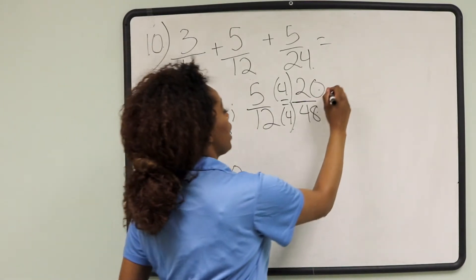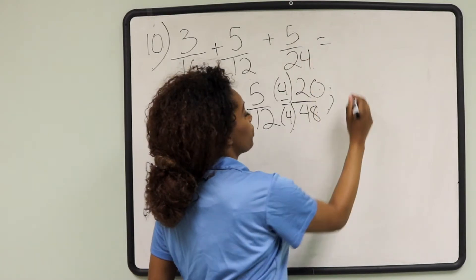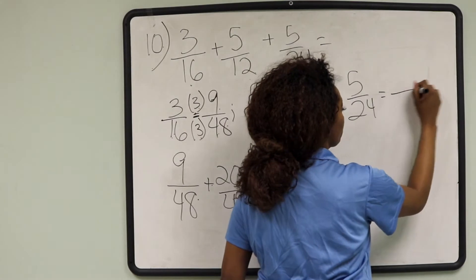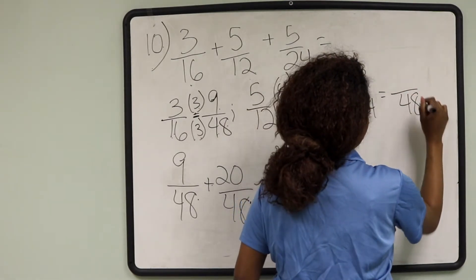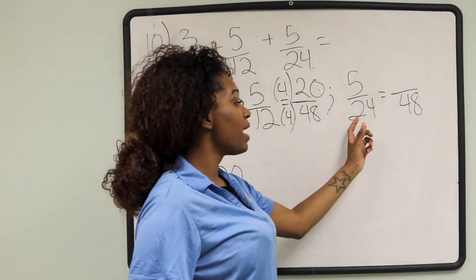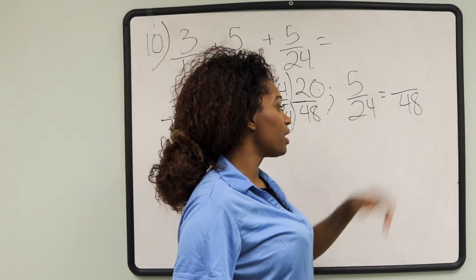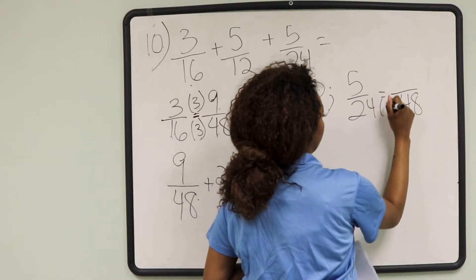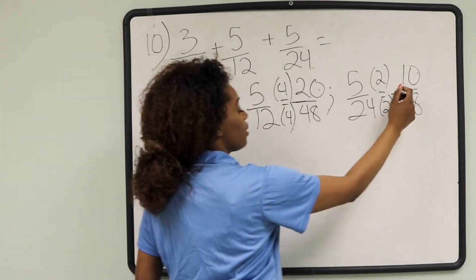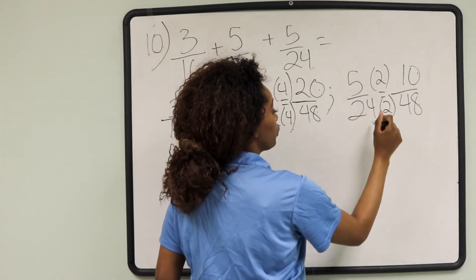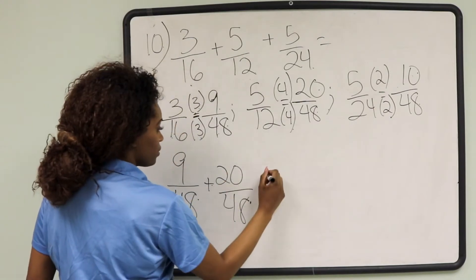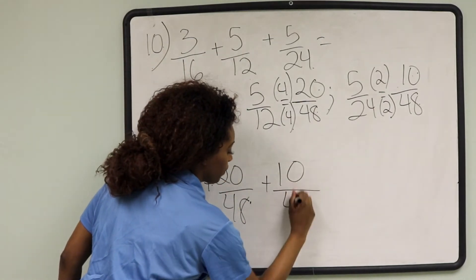We also have to change 5 over 24 into a fraction over 48. To get from 24 to 48, we have to multiply the denominator by 2, and we're going to multiply the numerator by 2 as well. Our equivalent fraction of 5 over 24 is 10 over 48.